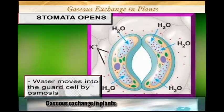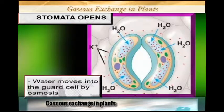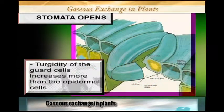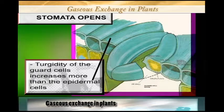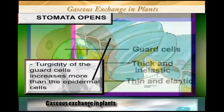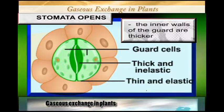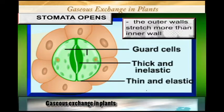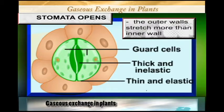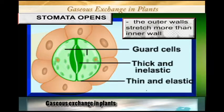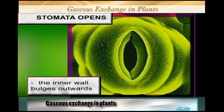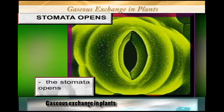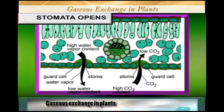When the osmotic pressure of the guard cell increases, this forces water to move into the guard cell by osmosis from the surrounding cells. When water enters the guard cells, the turgidity of the guard cell increases more than in the epidermal cells — those cells surrounding the guard cells. In the process, the inner wall of the guard cells thickens and the outer wall stretches more than the inner wall.